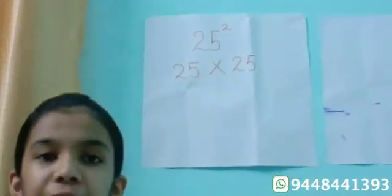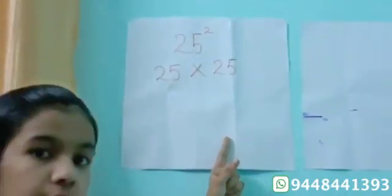If any number which ends with 5, then its square's last two digits must be 25. So let us put 25 in the answer.